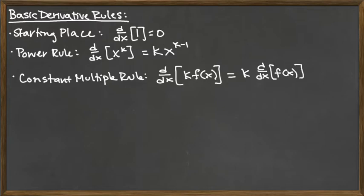So the constant multiple rule says any constants that are out front, we just basically leave there and move on to what's sitting next to it. And that's really why we have, as our starting place, just the derivative of 1 is 0, but that extends to the derivative of any constant is 0, simply by the constant multiple rule.